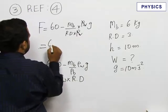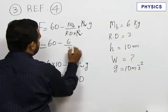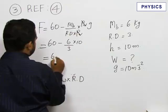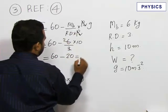We get 60 minus mass of the brick is 6 by 3 into 10. So that will be 60 minus 20 which is 40.